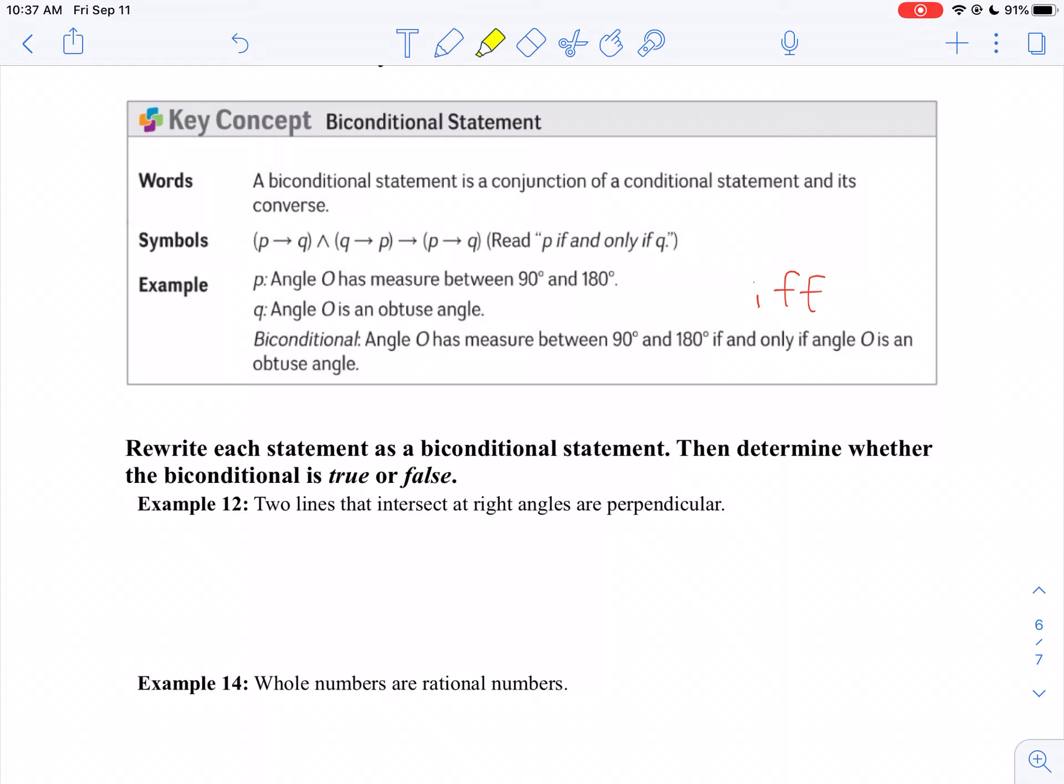They are abbreviating if and only if. The only time a biconditional is true is if both parts are true because the statement has to be true and its converse has to be true.